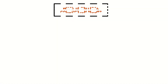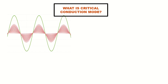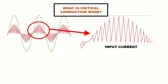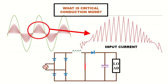What is critical conduction mode PFC? In critical conduction mode, the inductor current is allowed to completely go to zero before the next switching cycle of the MOSFET is initiated. The power switch turns off immediately when the current becomes zero. Hence, throughout the cycle of input voltage, the converter operates at different switching frequencies.